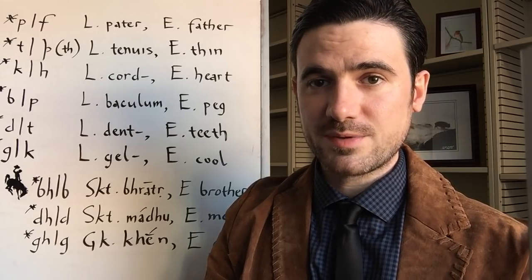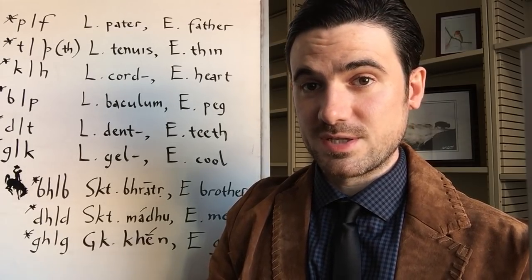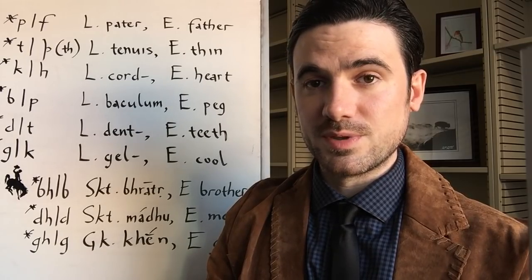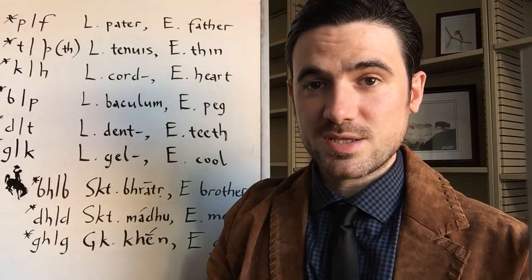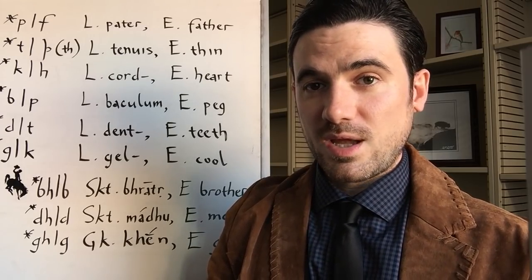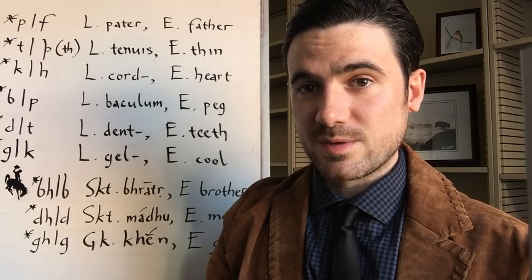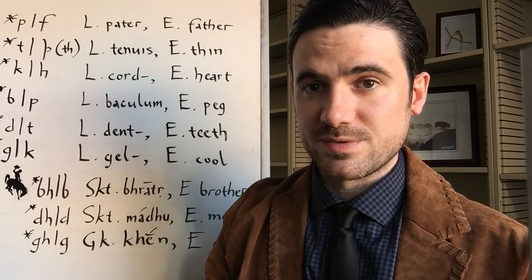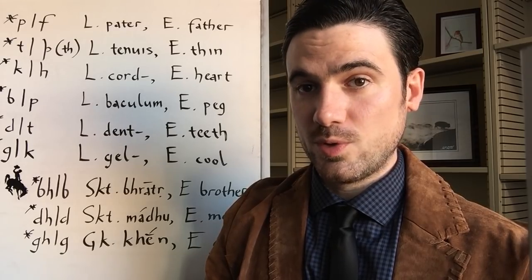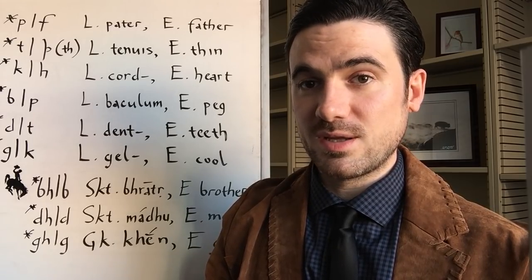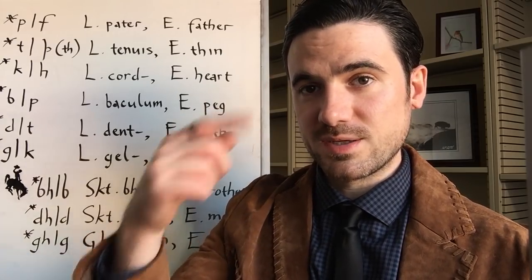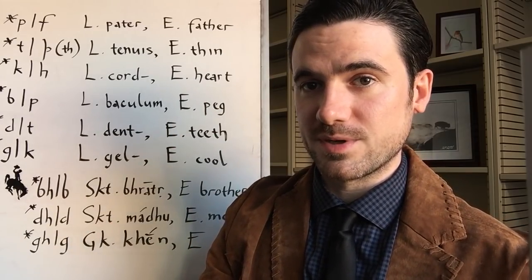Now the Germanic languages are not languages descended from German, although they include German. The Germanic languages include English, German, Dutch, Frisian, Yiddish, the Scandinavian languages - Swedish, Norwegian, Faroese, Icelandic, Danish - and also the extinct language Gothic and its close relatives. I have a video that discusses the timeline of Old Norse, one of the Germanic languages, and includes some discussions about the other Germanic languages too. I'll post that in a link in a card in the top right as well.